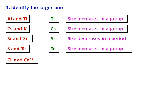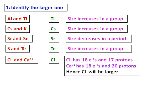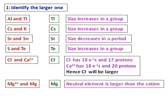For Cl⁻ and Ca²⁺: Cl⁻ is larger than Ca²⁺. Cl⁻ has 18 electrons and 17 protons, while Ca²⁺ has 18 electrons but 20 protons. The force with which 20 protons attract 18 electrons is larger than that of 17 protons, so Cl⁻ is larger. Between Mg²⁺ and Mg, the neutral magnesium is larger because a cation is always smaller than the neutral atom. Between Br⁻ and Br, Br⁻ is larger because the anion is always larger than the neutral atom.